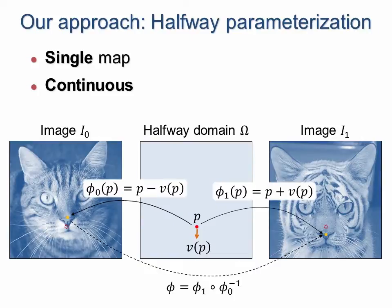We introduce a simpler approach: the halfway parametrization. The idea is to define a vector field V over a domain that is intermediate between the two images. Thus, the intermediate image is parametrized by a single, continuous function.